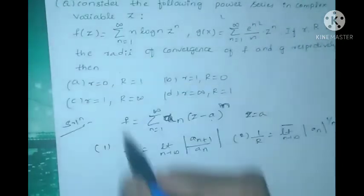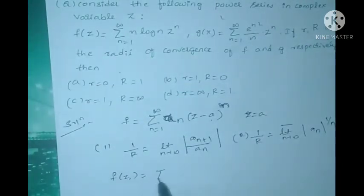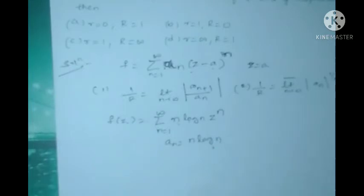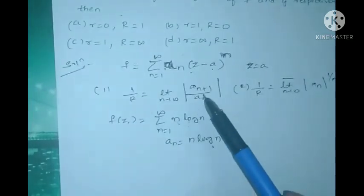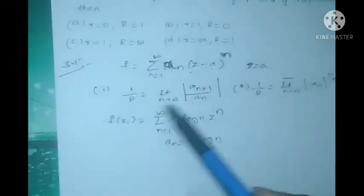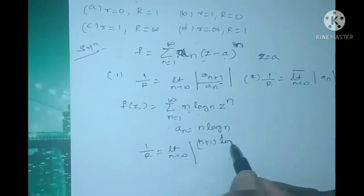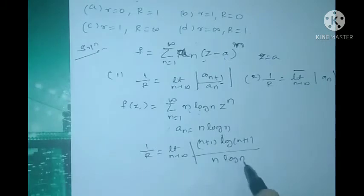The first function is f(Z) = summation n=1 to infinity of n·log(n)·Z^n. Comparing to the general formula, here a_n = n·log(n). Since logarithm is involved in the function, we use the ratio test: 1/r = limit n→∞ of |(n+1)·log(n+1)| / |n·log(n)|.